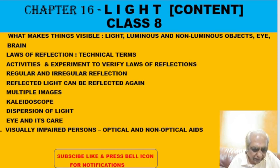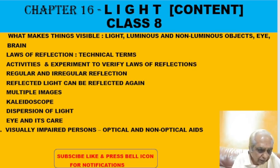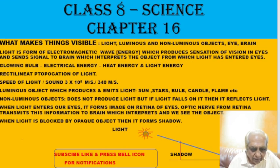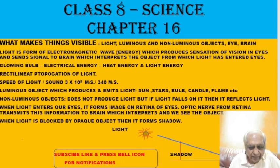We will also learn how visually impaired persons can use various optical and non-optical aids so that they can understand the basic things around them. There are two types of objects: luminous objects produce and emit light, like the sun, but we are also able to see the moon. The moon does not produce light — sunlight falls on the moon and it reflects that light into our eye.